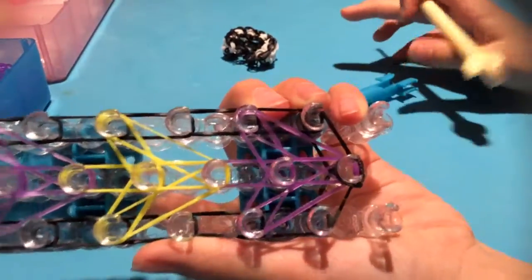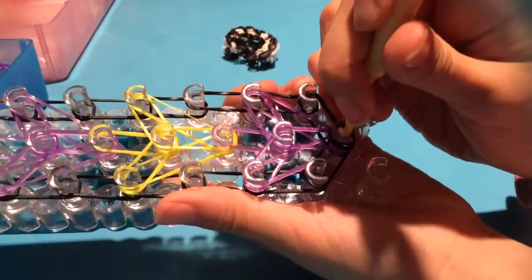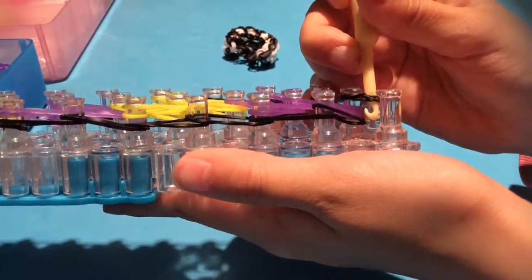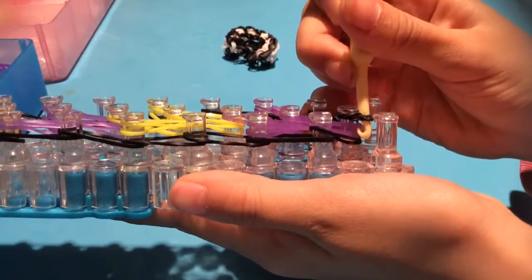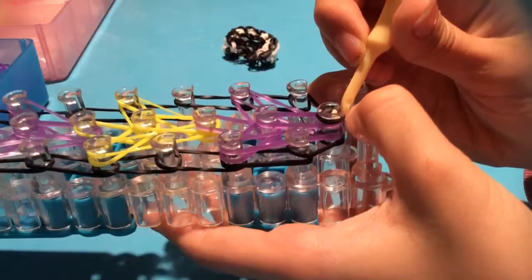Go to the pegs closest to you and now we start hooking. We go in here, and then get the first purple band, the one that's on top. Press the cap band down and put it forward.